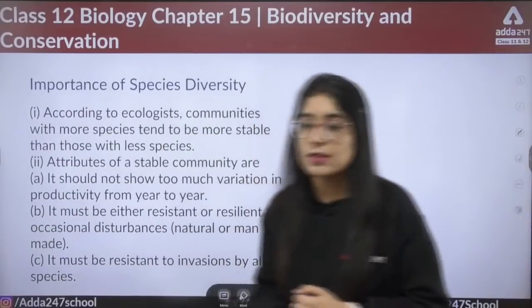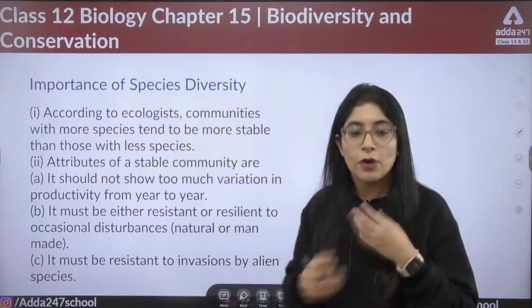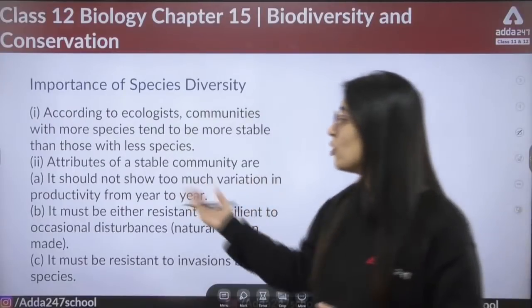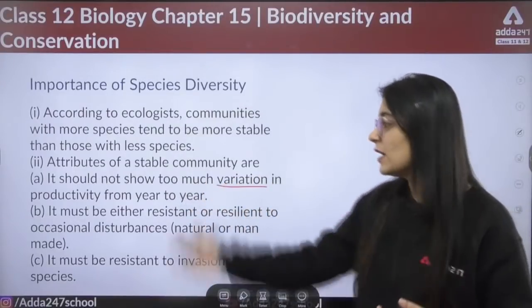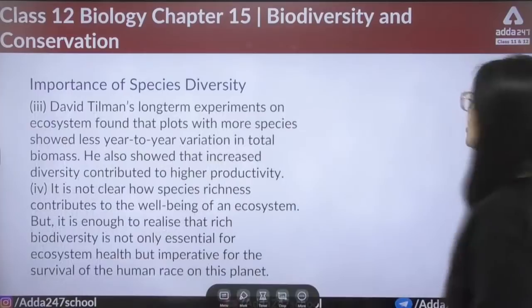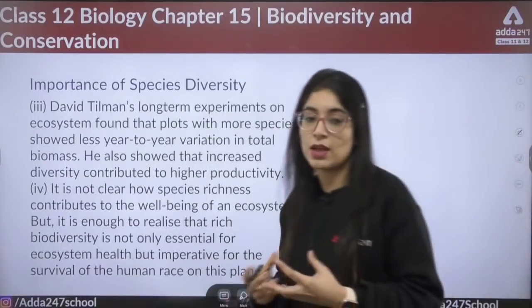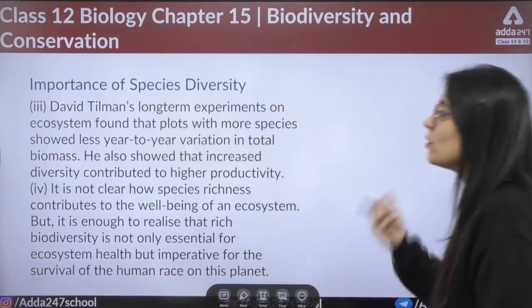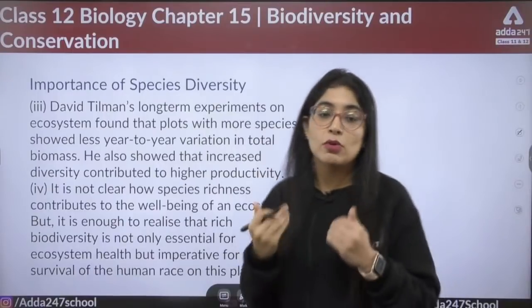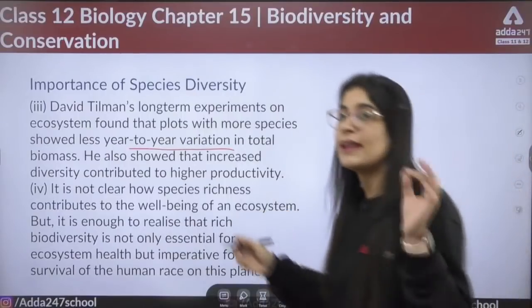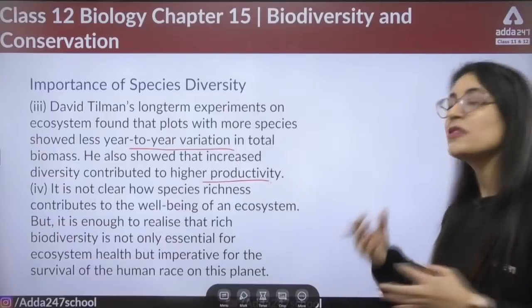The normal Z value is 0.1 to 0.2, but when the curve is steeper in tropical regions, a higher value is obtained. Regarding importance of species diversity: communities with more species are more stable. A stable community should not show much variation in productivity from year to year, must be resistant or resilient to occasional disturbances, and must resist invasion by alien species. David Tilman's long-term experiments showed communities with more species had less year-to-year variation and increased productivity.